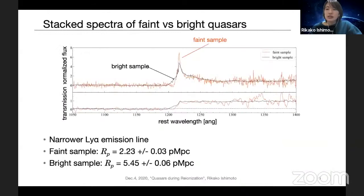Here, let me explain our results. First, this figure shows the mean stacked spectrum of faint and bright sample shown in the orange and black line. As you can see in this figure, the faint sample shows a narrower Lyman alpha emission line. And we measure the proximity zone sizes of faint and bright sample. And faint sample have a significantly smaller proximity zone than that of bright sample.